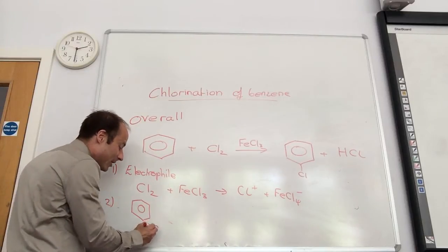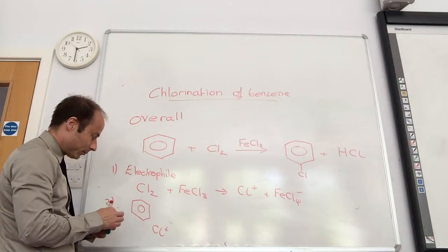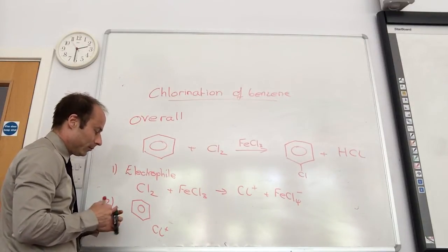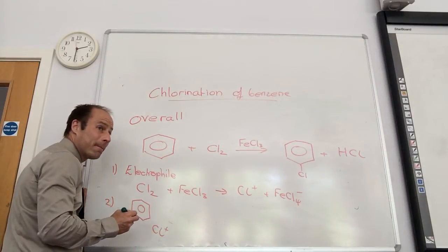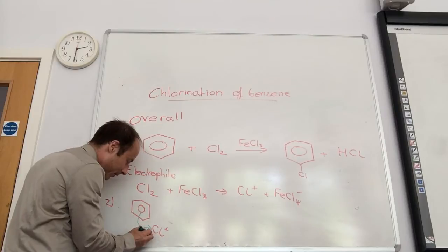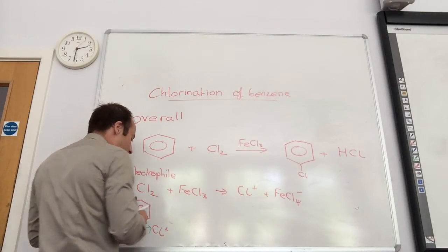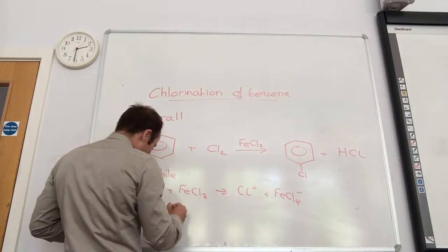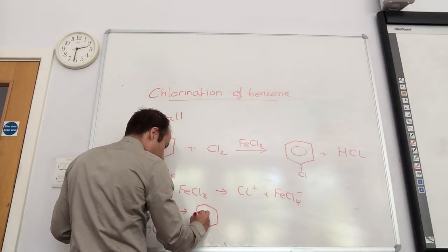My attacking species now is Cl+. And then draw the curved arrow from the circle to the Cl. There my electrons go. That gives me an unhappy face with a plus. How unhappy the face is.